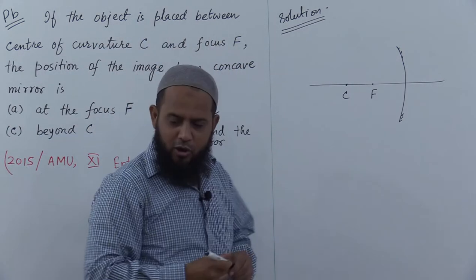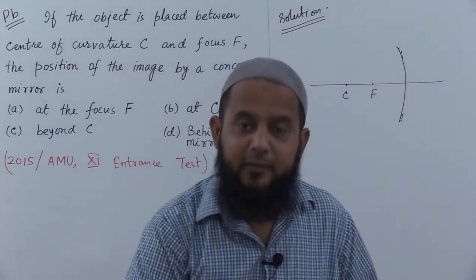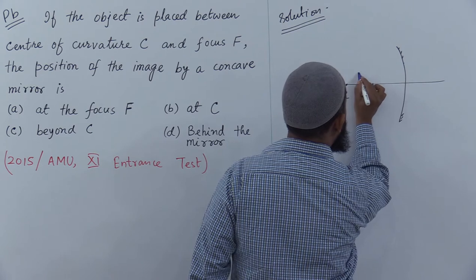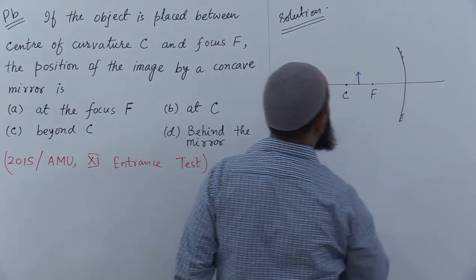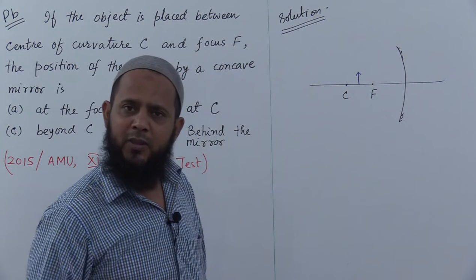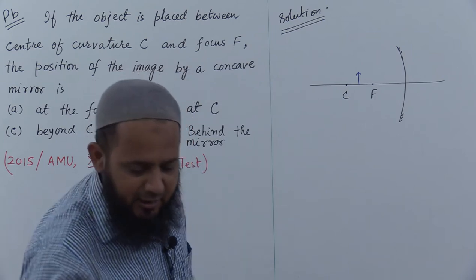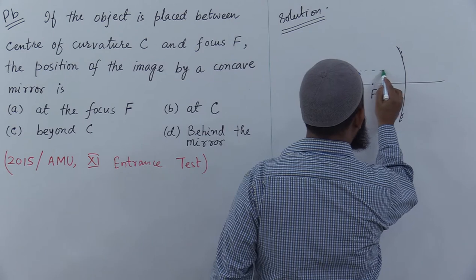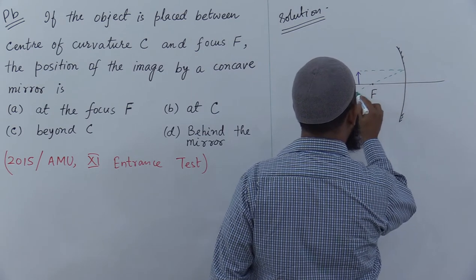The object is placed between center of curvature C and focus F. Suppose we place the object here, between C and F. We draw one ray parallel to the principal axis, which reflects through the focus.